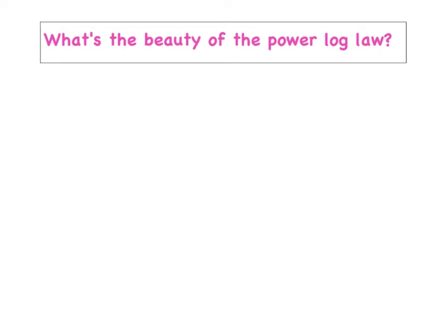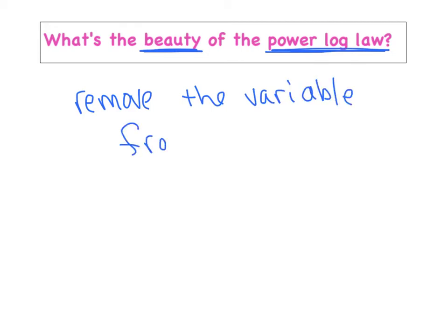What's the big deal with this power log rule? What's the big deal about law number three? The beauty is you can remove the variable from the exponent. That's what we're really trying to accomplish. We started off with an x in the exponent, and by taking the log of both sides and using this power law, we're able to move the x down in front, and it was no longer in the exponent.